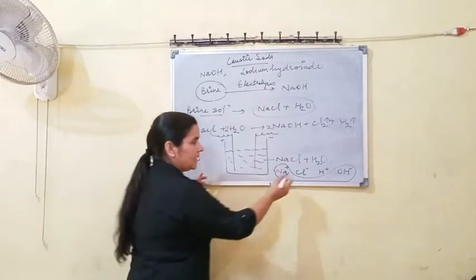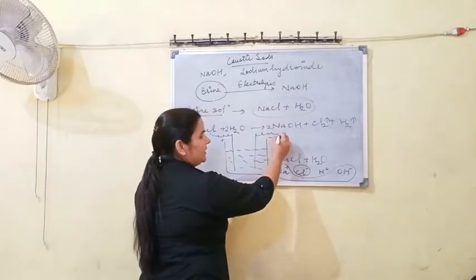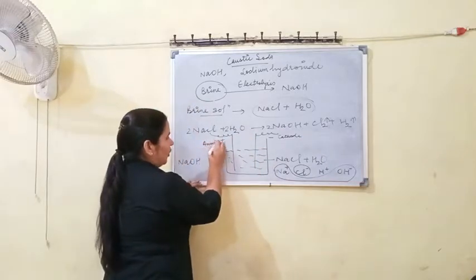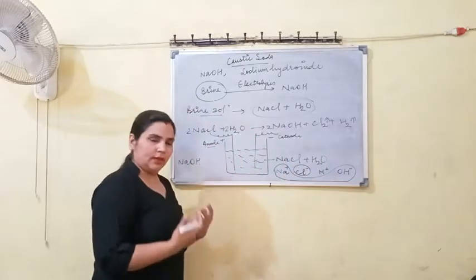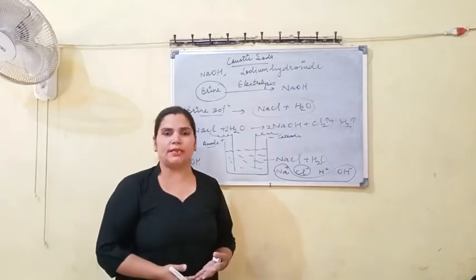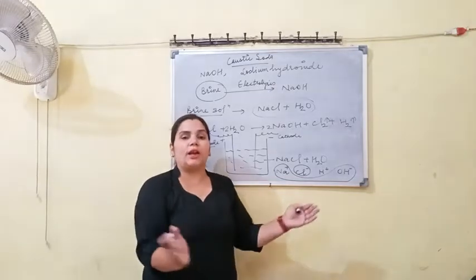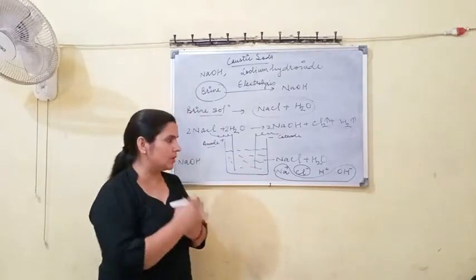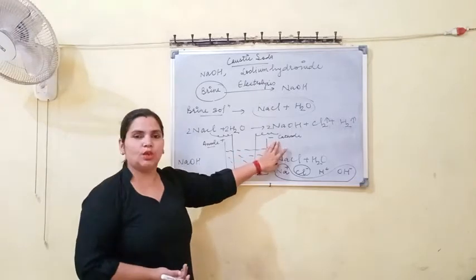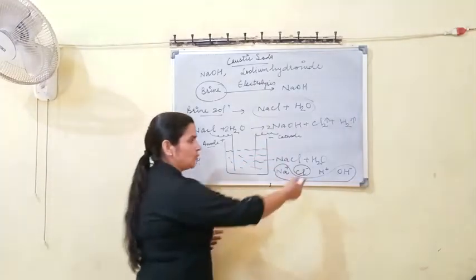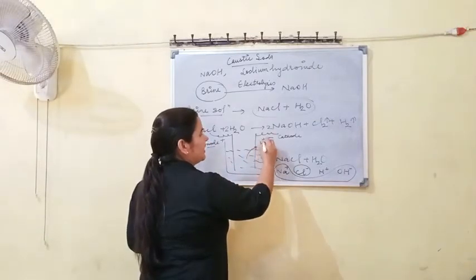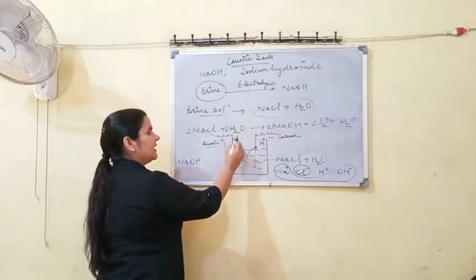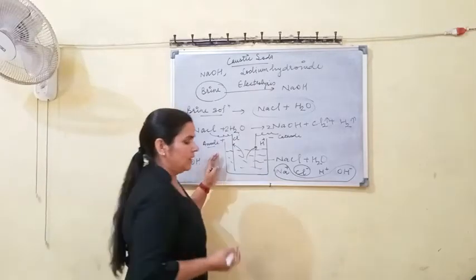Now, the Cl⁻ ion — the negative electrode is called the cathode, and the positive electrode is known as the anode. Opposite charges attract each other, and same charges repel. So the positive H⁺ ion will be attracted to the cathode, and hydrogen gas is obtained at the cathode. The negative Cl⁻ ion will be attracted to the anode, and Cl⁻ is obtained at the anode.